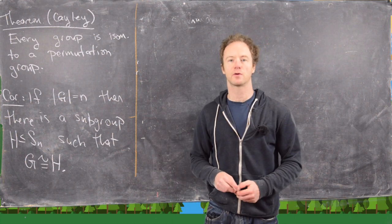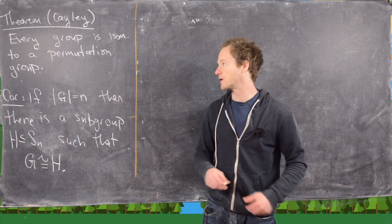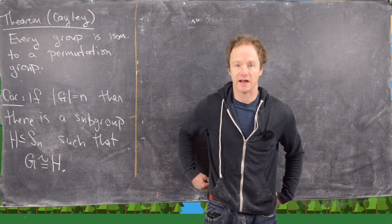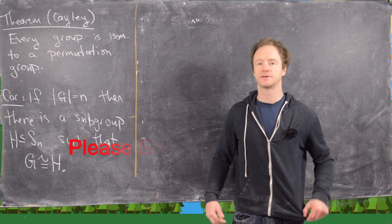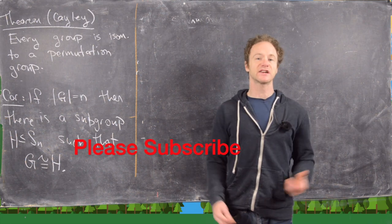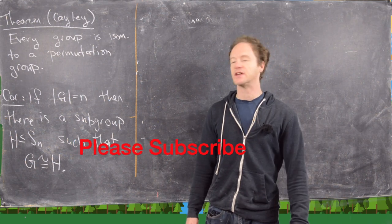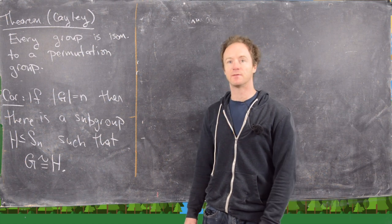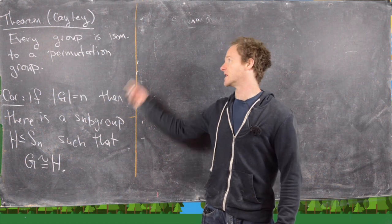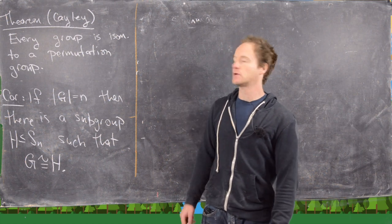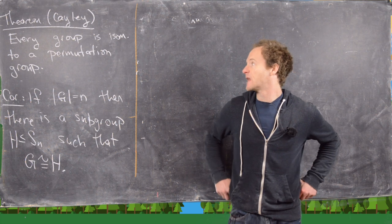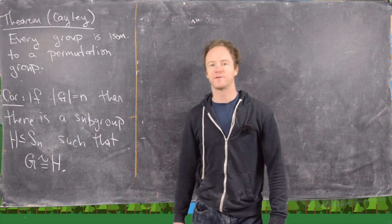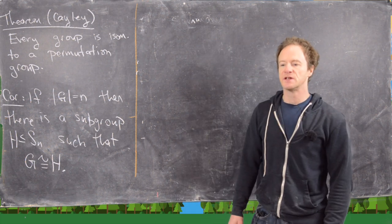In this video we're going to look at an important result from group theory called Cayley's Theorem and its corollary, with some examples. It's going to have a pretty short proof, so that will give us plenty of time to look at some cool examples. Cayley's Theorem says the following: every group is isomorphic to a permutation group.